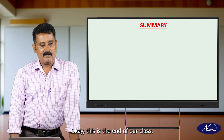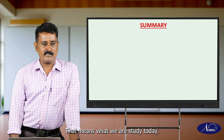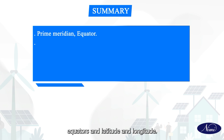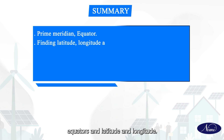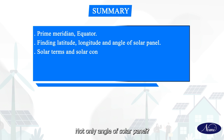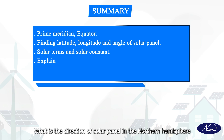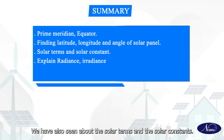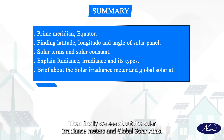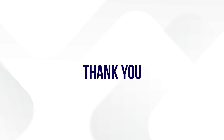This is the end of our class. We are going to see the summary of what we have studied today. In today's class, we have seen about the prime meridian, equator, latitude and longitude, and how to find latitude and longitude. We covered the angle and direction of the solar panel in the northern and southern hemispheres. We also covered solar terms and solar constants, radiance, irradiance and its types, solar irradiance meters, and global solar atlas. Thank you.